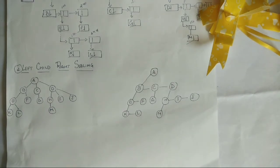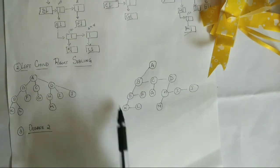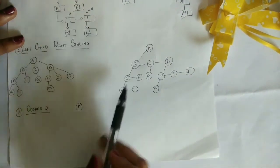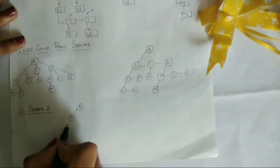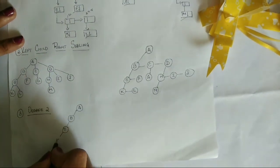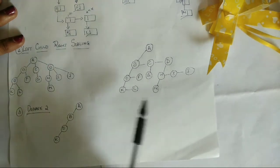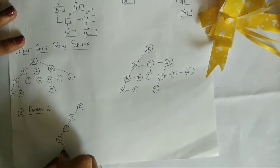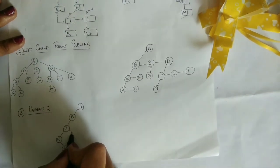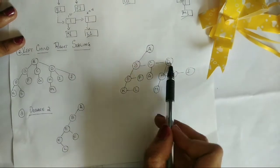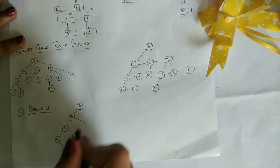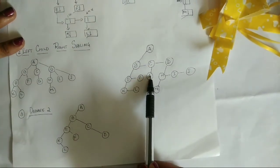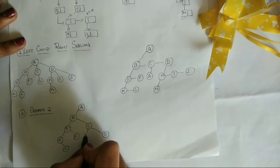Now let's move on to degree 2. In degree 2, the left child right sibling representation is altered to get degree 2. First, A is the root node, then B as the left child, E as the left child of B, and K as the left child of E. Now make the rest of the attached siblings as the right child. K has a sibling, so make it the right child of K. E has a sibling F, so make that the right child of E. B has two siblings C and D — make them as the right child of B. Now C has a child G, so the child is placed as the left child.